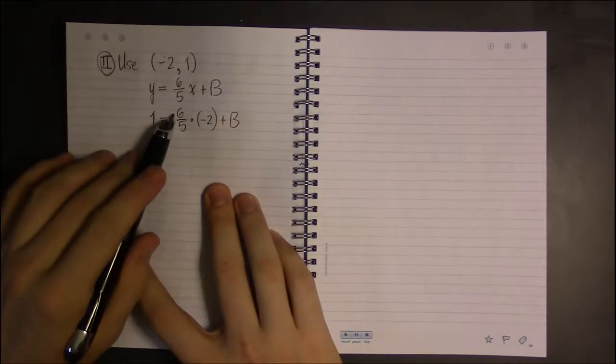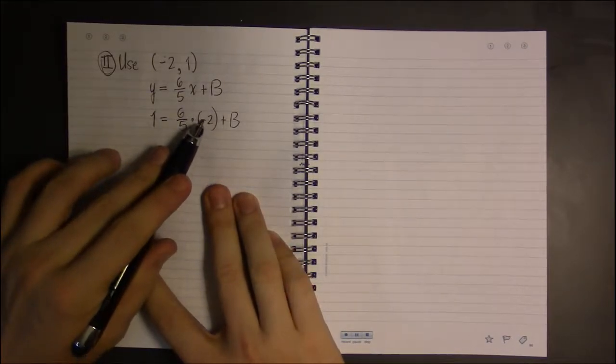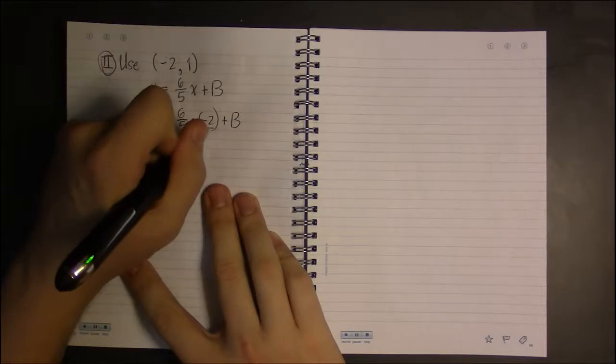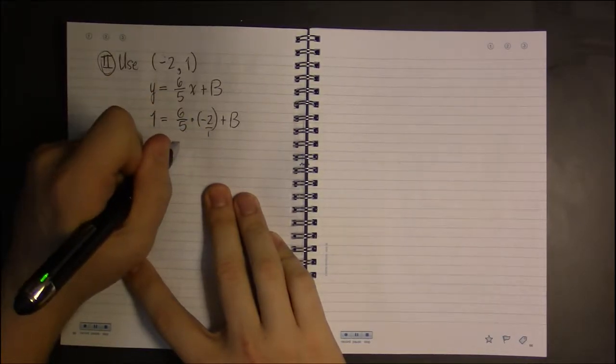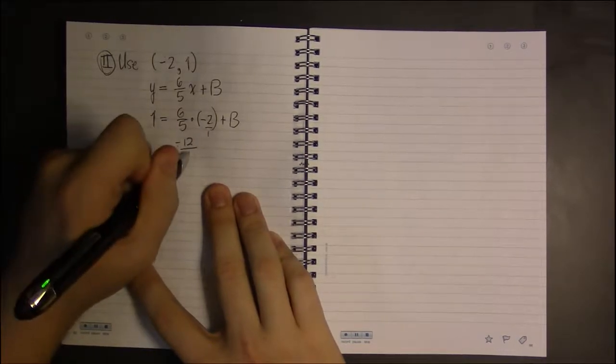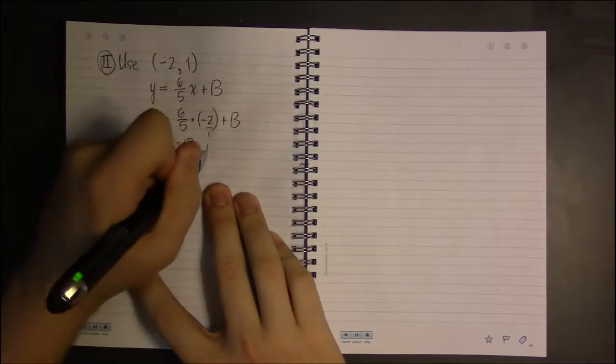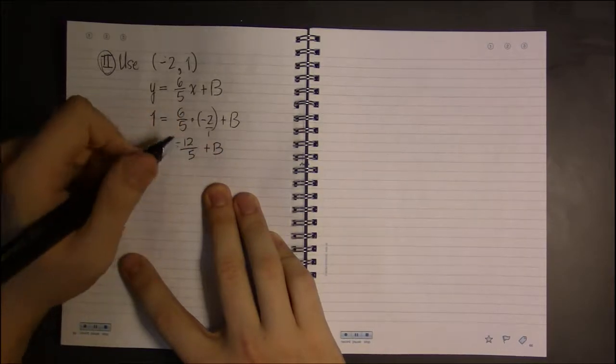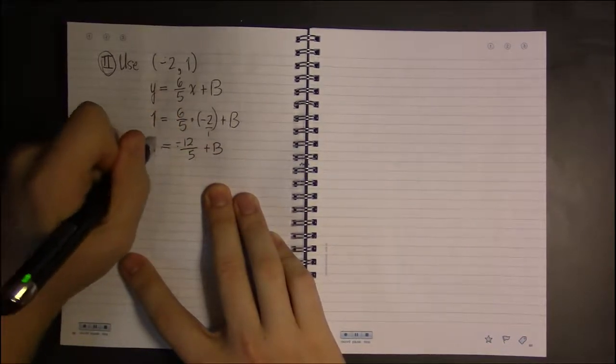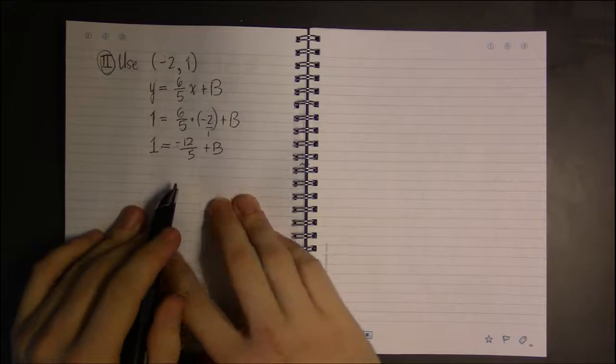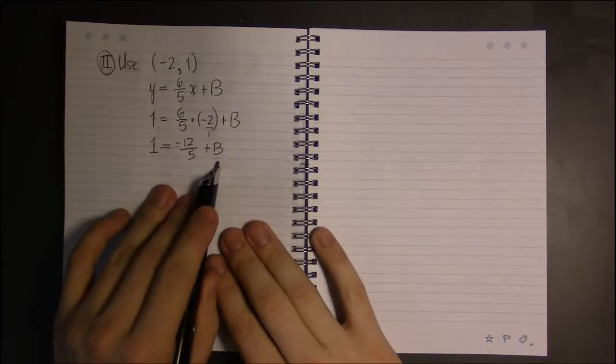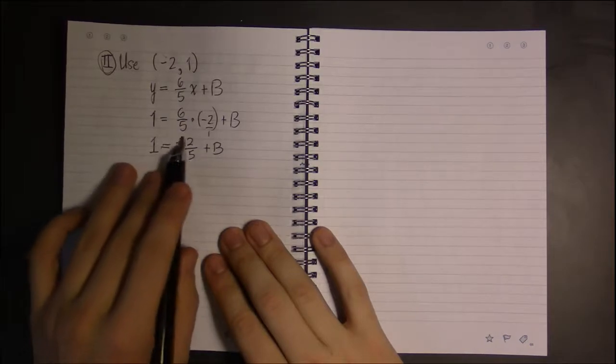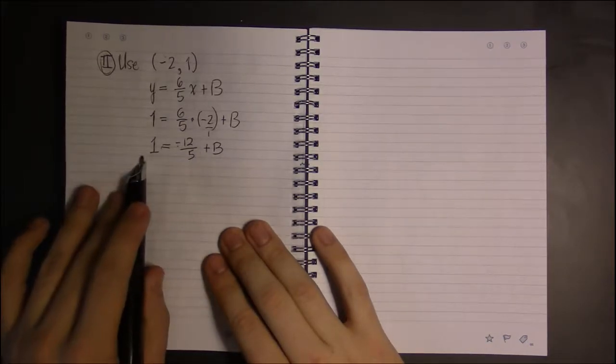Well, 6/5 times -2, that's -2 over 1. So, 6 times -2 is -12. 5 times 1 is 5. We're trying to find out what b is, so we'd like to get b by itself, which would mean moving the -12/5.